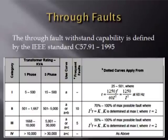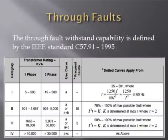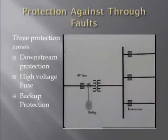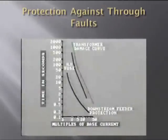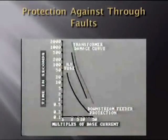Through-fault withstanding capability has been divided by the IEEE standard into four categories as indicated in the table. It is represented as a curve plotted between multiples of normal current and the allowable time. In this example, a transformer feeds three feeders through a bus bar. If a fault occurs in any of the feeders, the respective protective system of the feeder — called the downstream protection — operates. If it fails to operate, then the high voltage fuse on the primary end of the transformer works. As the HV fuse cannot sense small faults, a backup relay like a 51G relay must be employed. The graph shows that downstream protection operates before the fuse, and if both fail, the system may be damaged.